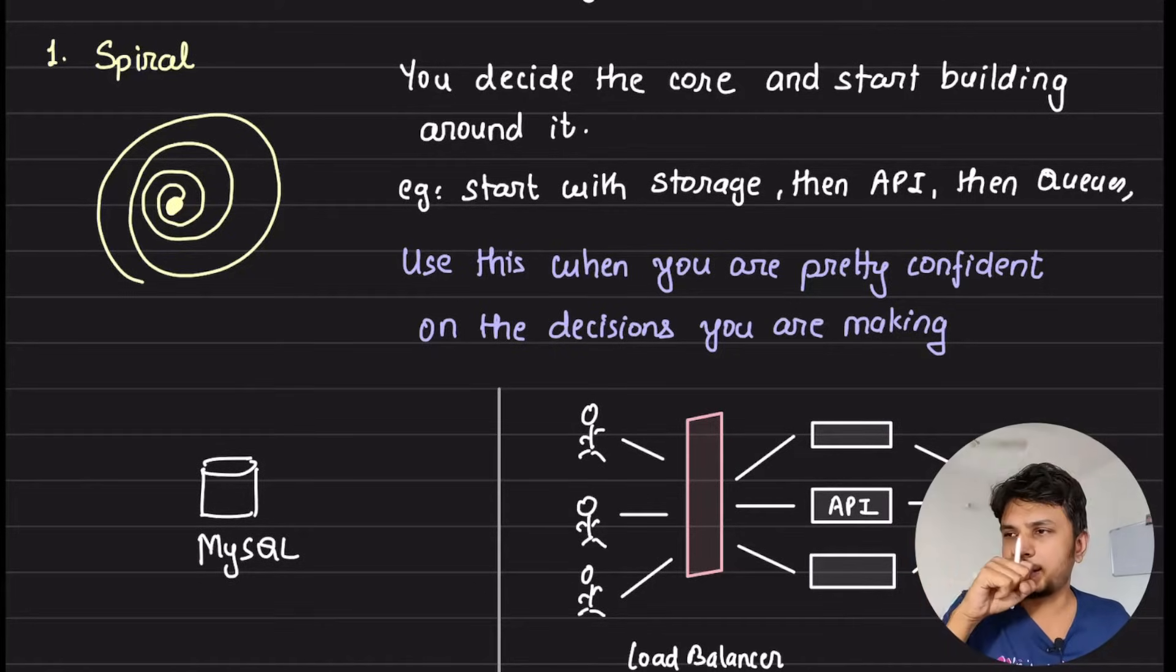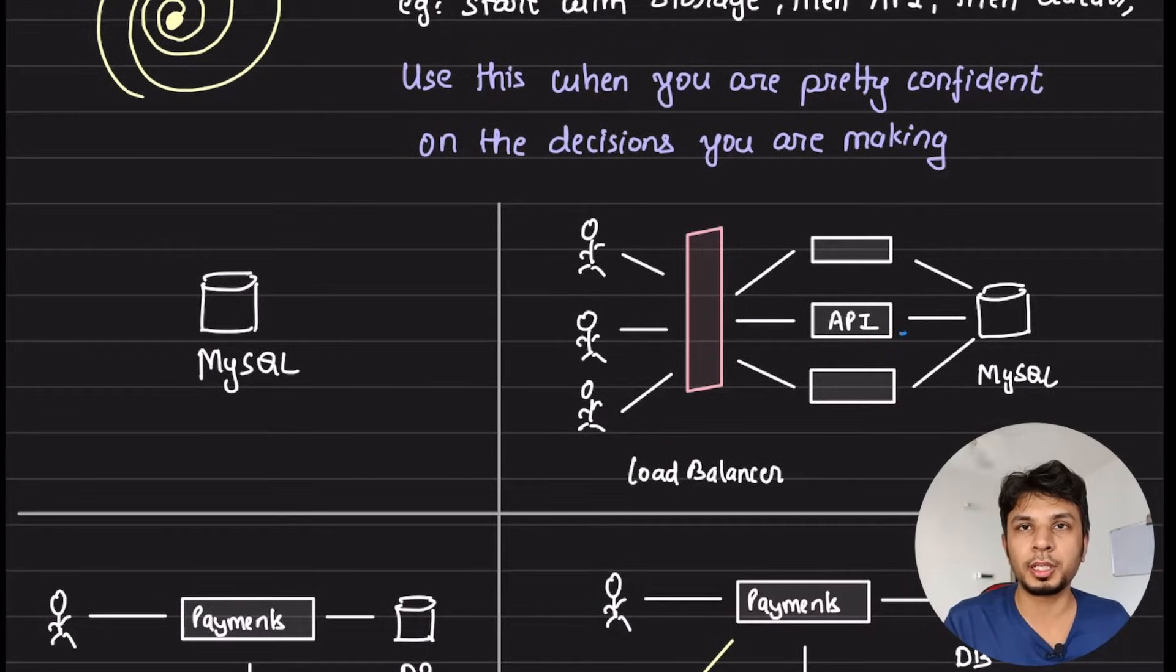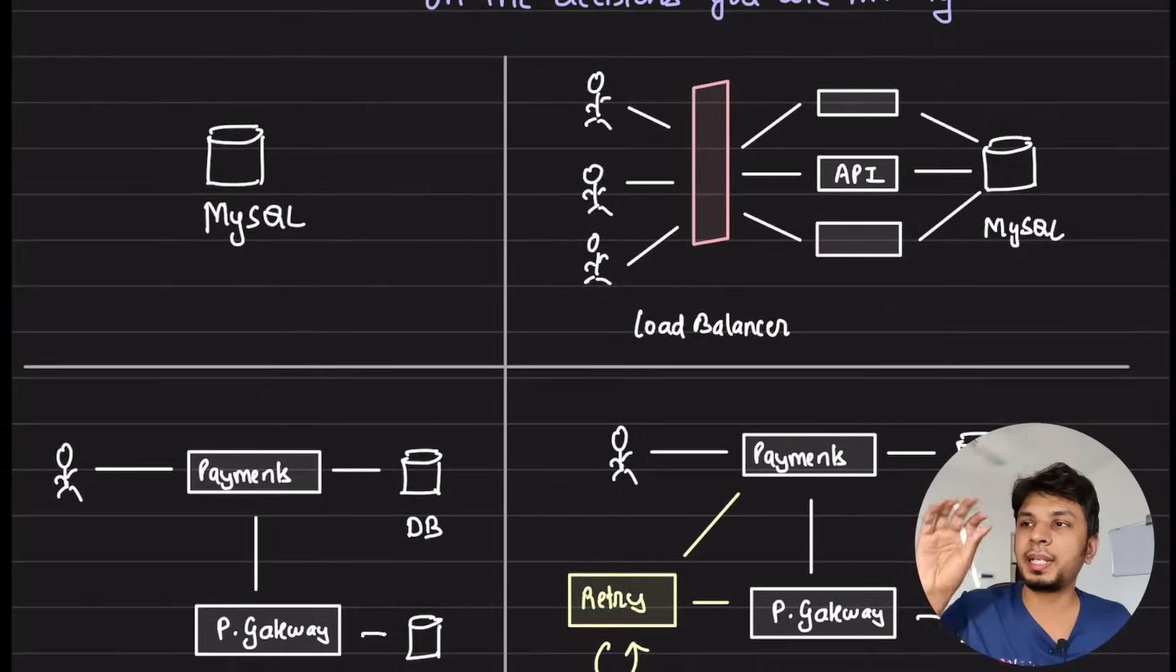For example, you start with storage. You decided I want to use this particular database and then you move to the next part where now that I have a database I want a bunch of API servers to basically support it.